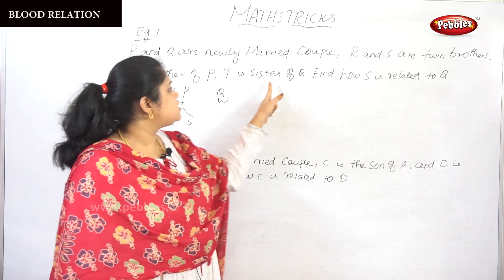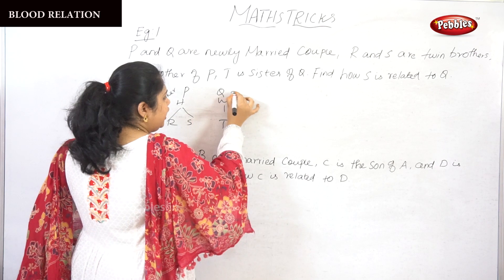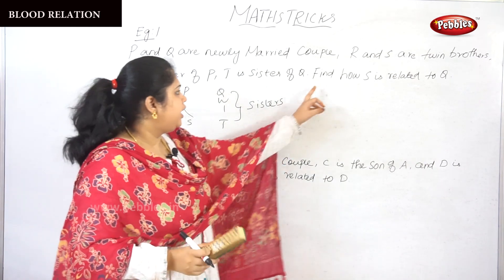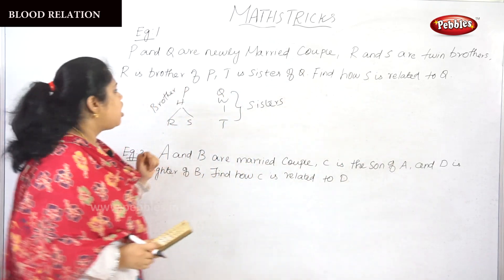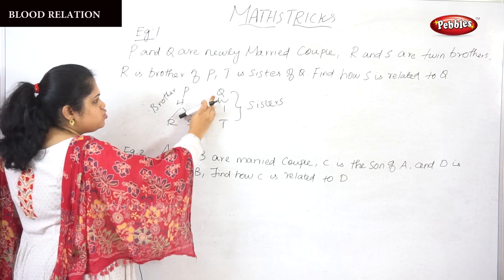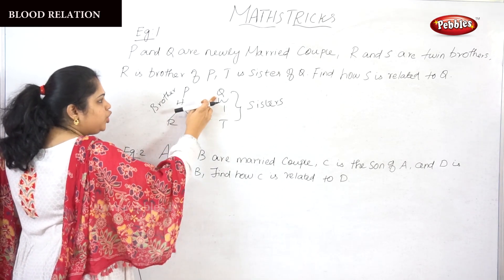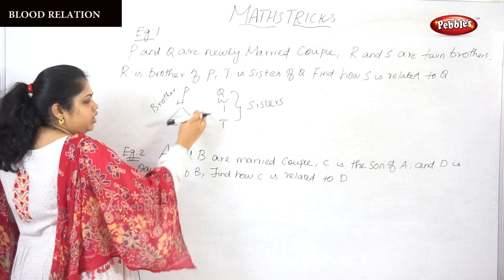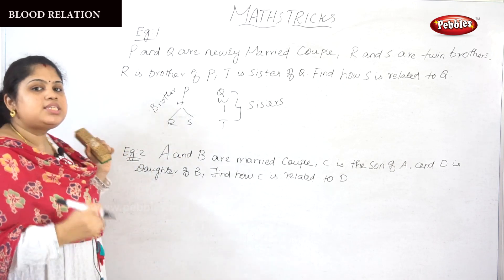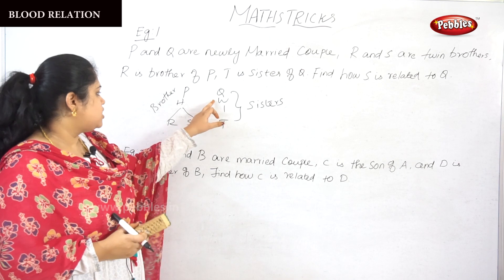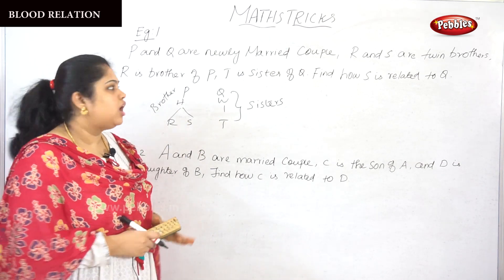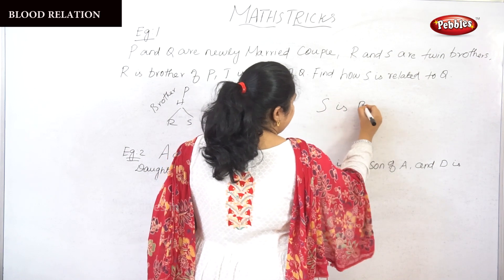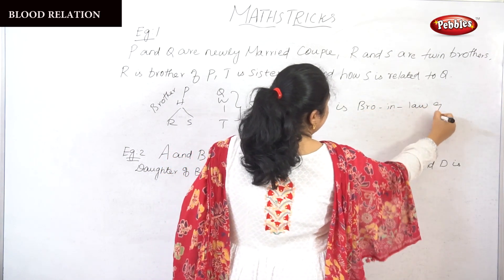T is sister of Q, so Q and T are sisters. Now find how S is related to Q. Q and T are sisters, and Q's husband is P. So S is P's brother, meaning S is Q's husband's brother. A husband's brother is a brother-in-law. So S is brother-in-law of Q.